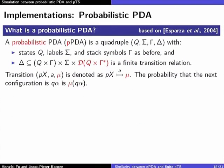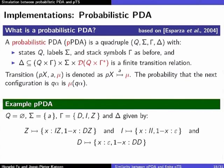A probabilistic pushdown automaton is just like a pushdown automaton, except the transition relation maps to a distribution over configurations. Here is a small example with three stack symbols and no control states: if you have a Z, with probability x you push Y, and with probability 1-x you push D. If you have a D, with probability x you pop it and with probability 1-x you push another D.